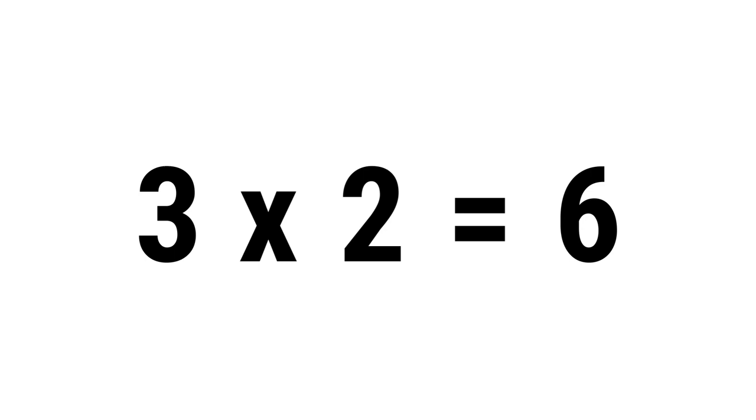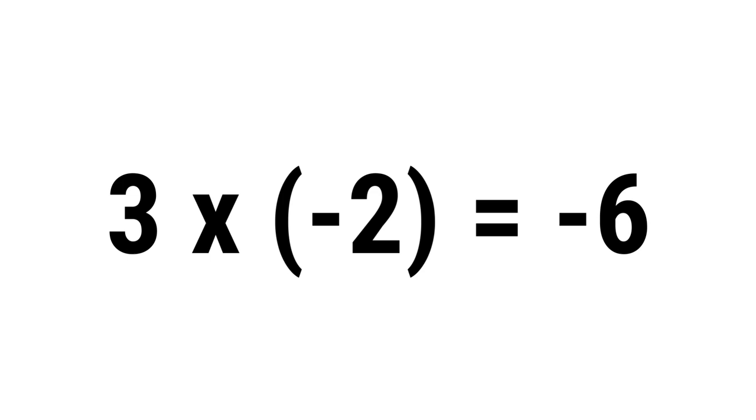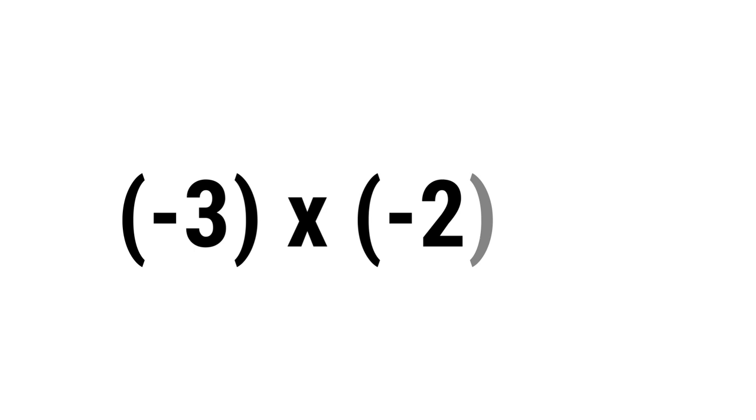The second one is, when you multiply a positive and a negative number, you will get a negative number. And the third one is, when you multiply two negative numbers, you will get a positive number.